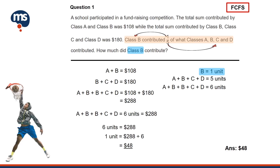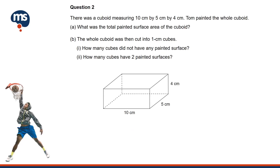Let us move on to the next question. Question 2: There was a cuboid measuring 10 cm by 5 cm by 4 cm. Tom painted the whole cuboid. Part A: What was the total painted surface area of the cuboid? Part B: The whole cuboid was then cut into 1 cm cubes. Part B Part 1: How many cubes did not have any painted surface? Part B Part 2: How many cubes have 2 painted surfaces?